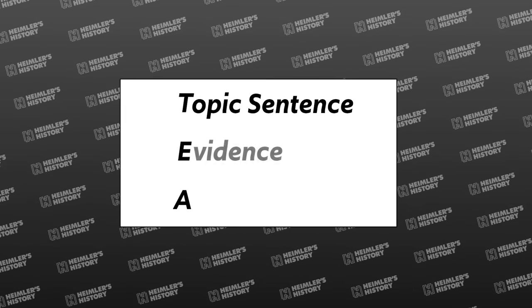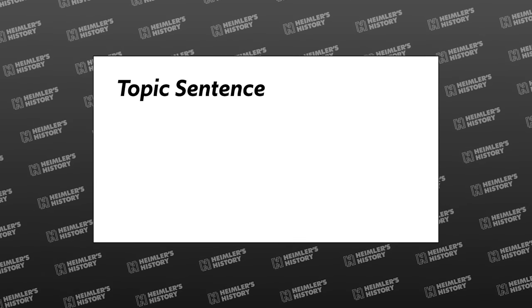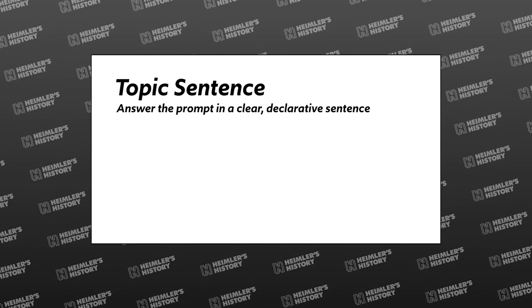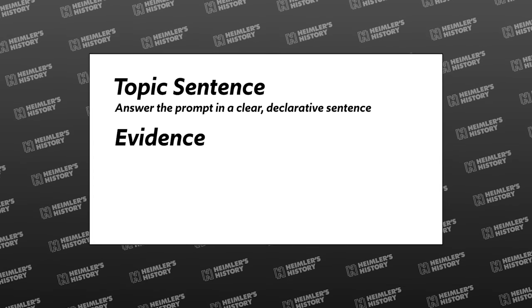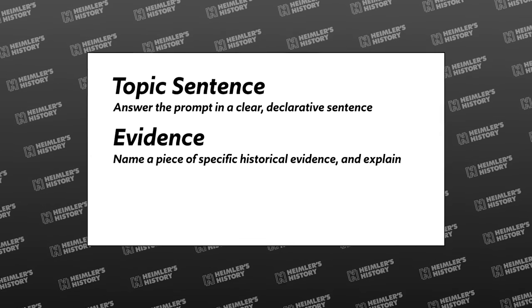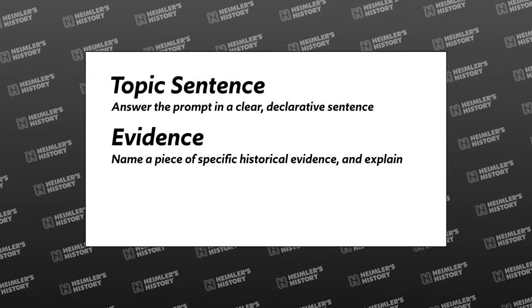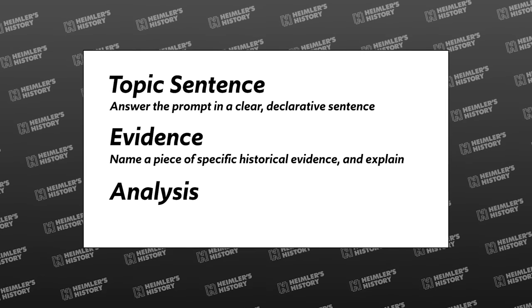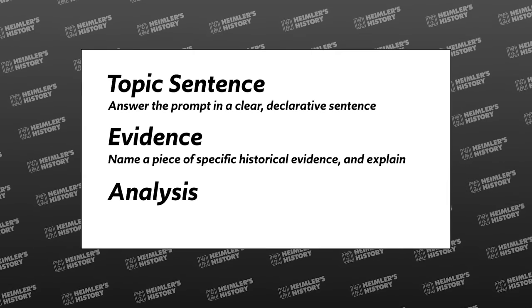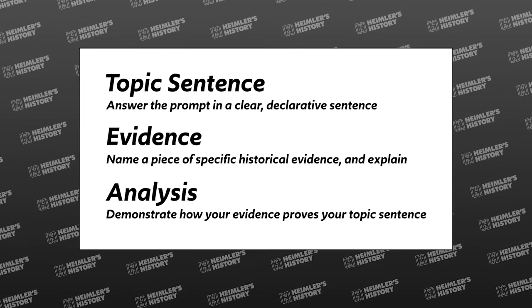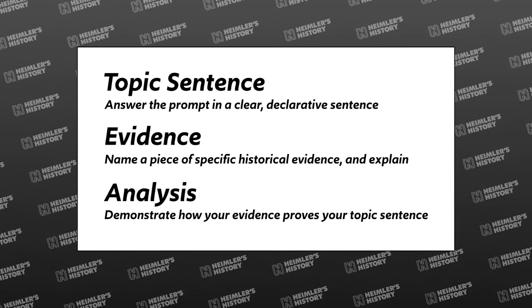The process is: T — Topic sentence, Evidence, Analysis. Now I didn't make that up. It's a pretty common way to teach SAQs. So let me explain each one. The first part of your answer is a topic sentence — just answer the prompt in a clear declarative sentence. The second sentence is where you introduce your evidence, and make sure that it is specific: name someone, or some event, or some artifact, and tell what it means. The third sentence is your analysis, which means you're going to use it to connect the first and second sentences — demonstrating how your evidence proves your topic sentence.